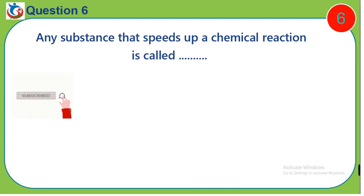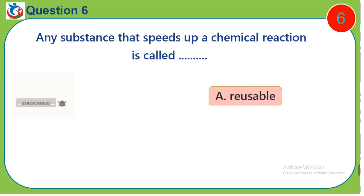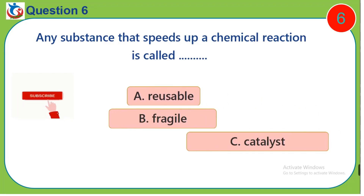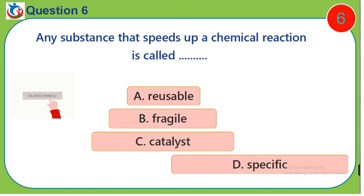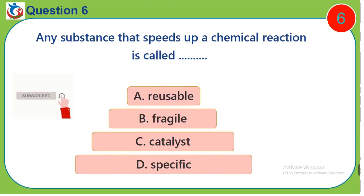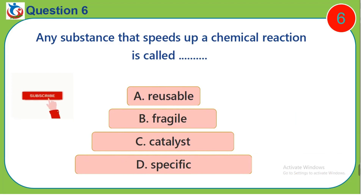Question 6. Any substance that speeds up a chemical reaction is called dash. A. Reusable. B. Fragile. C. Catalyst. D. Specific.